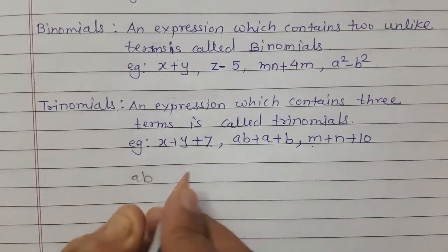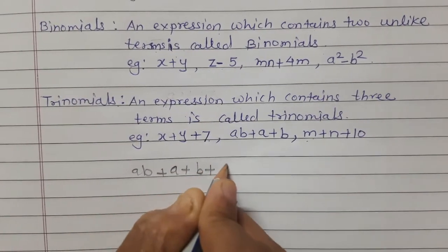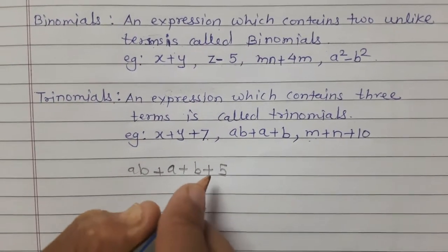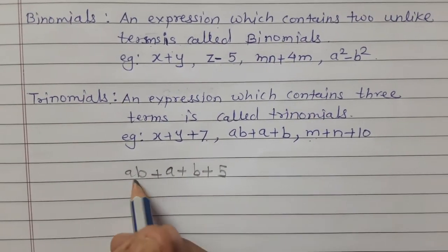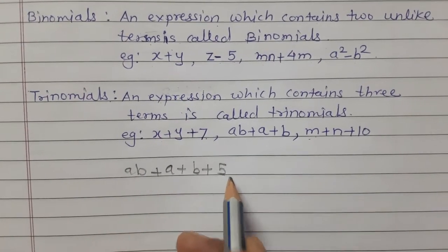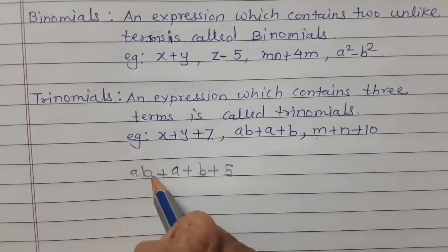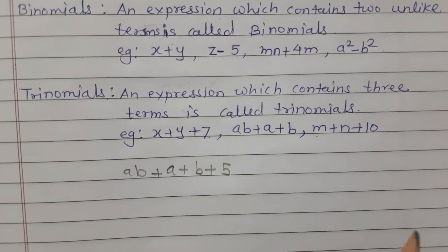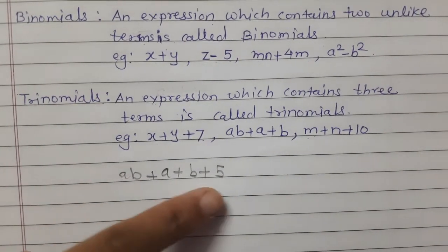Suppose I take the expression ab plus a plus b plus 5 — is it a trinomial? No. It contains four terms: a, b, a, b, 5. So this is not a trinomial.